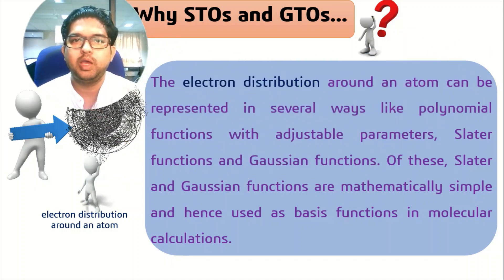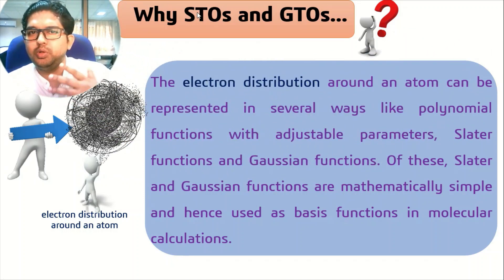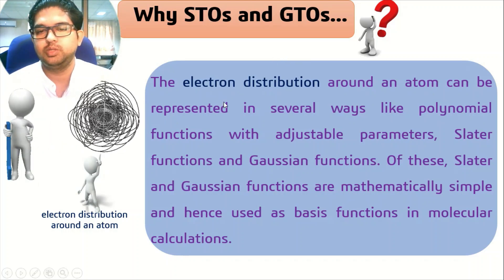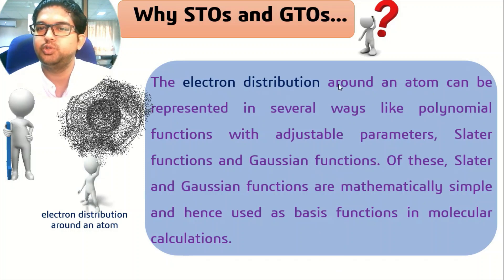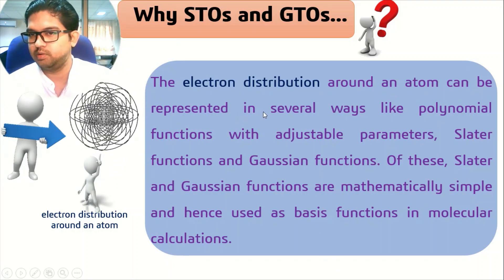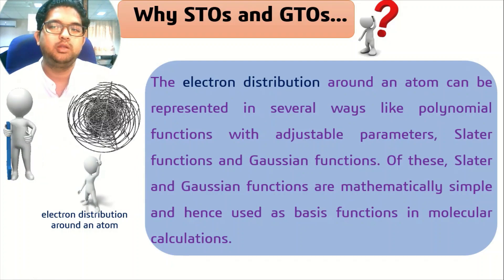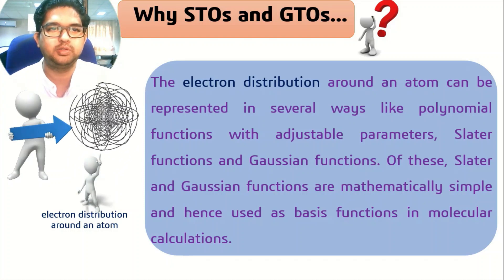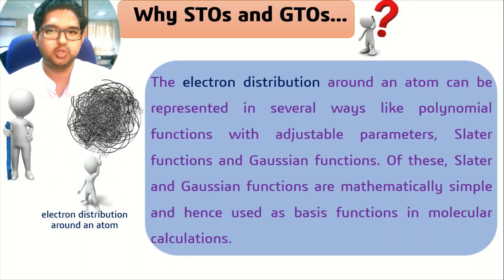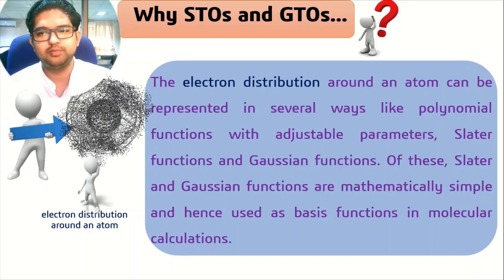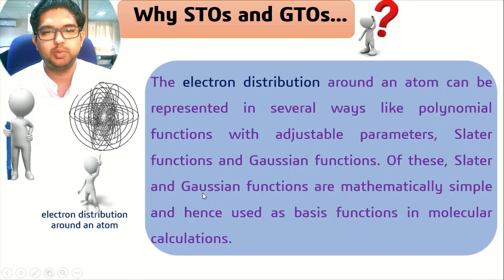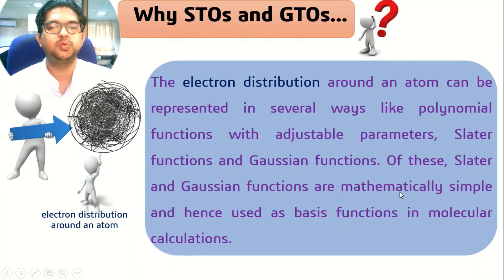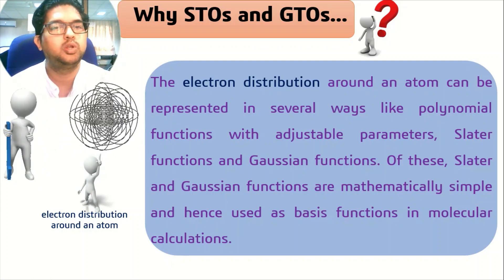Why do we generally use only Slater type orbitals or Gaussian type orbitals? The electron distribution around an atom can be represented in several ways — polynomial functions, Slater functions, Gaussian functions, and many other types. However, from all of these, Slater type orbital functions and Gaussian type functions are mathematically simple, and hence they are used as basis functions in molecular calculations.